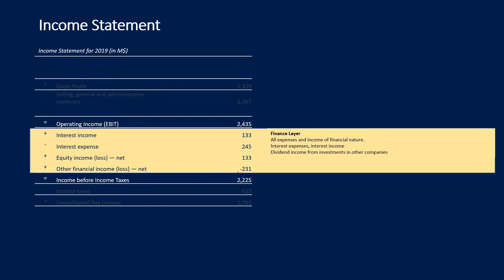The finance layer is mainly made of interest expenses for the debt that we have borrowed from a bank or the capital market. Sometimes companies also invest money to earn interest income, putting aside some money for later. If companies like this one have invested in other companies, they will also earn some dividends — shown as equity income. And there may also be some other financial income or loss — in this case it's a loss.